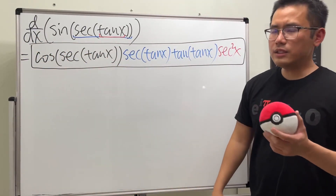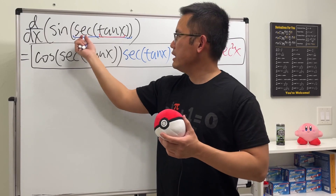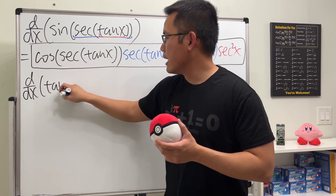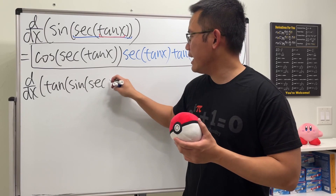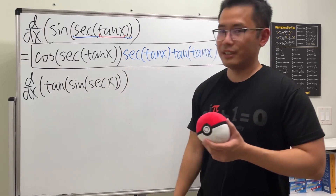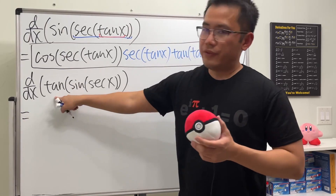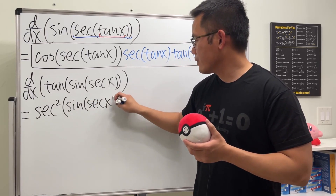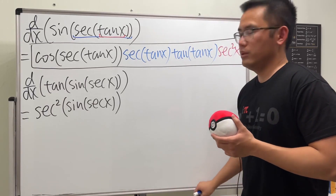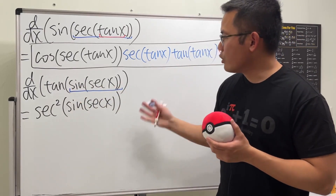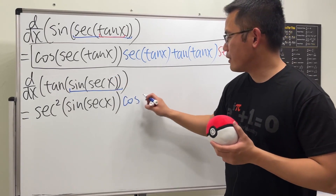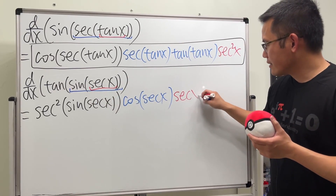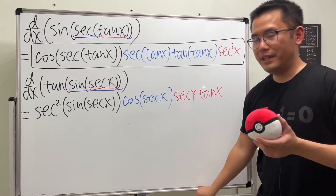The next one: let's put tangent on the outside, then sine, then secant, then x — so we differentiate tangent of sine of secant of x. Differentiating tangent gives secant squared, and whatever stays inside. Next, applying the chain rule again, the derivative of sine is cosine of secant x, and lastly the derivative of secant is secant x times tangent x. That's the answer for that one.